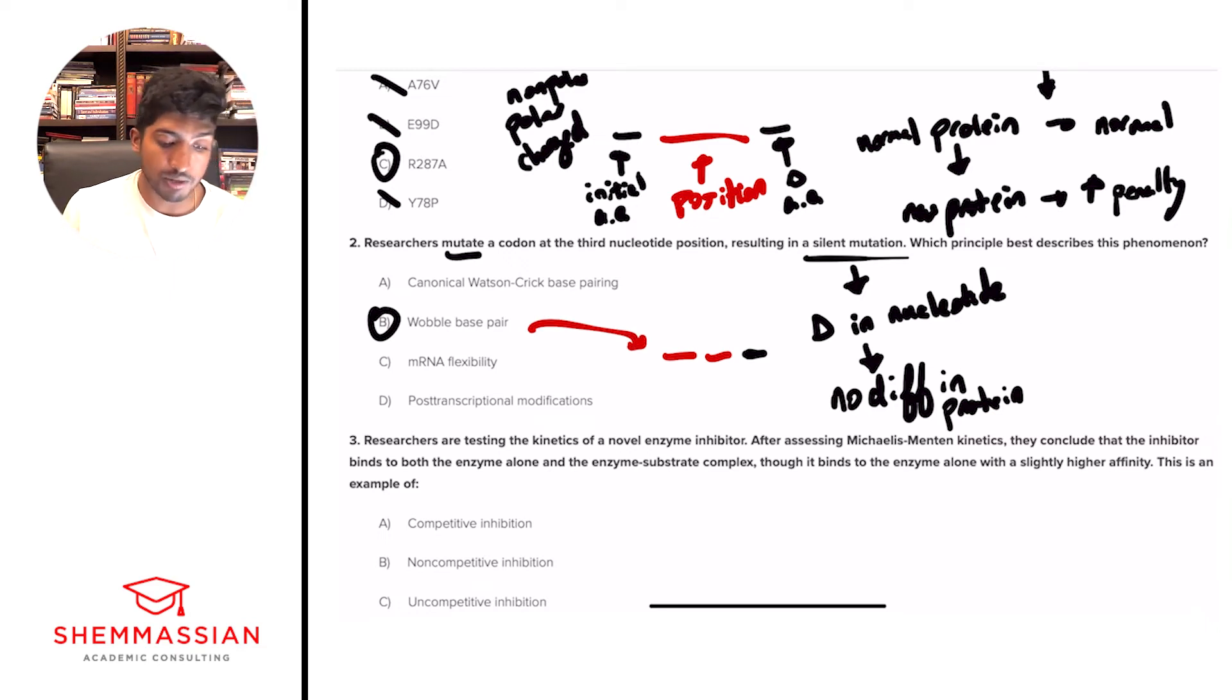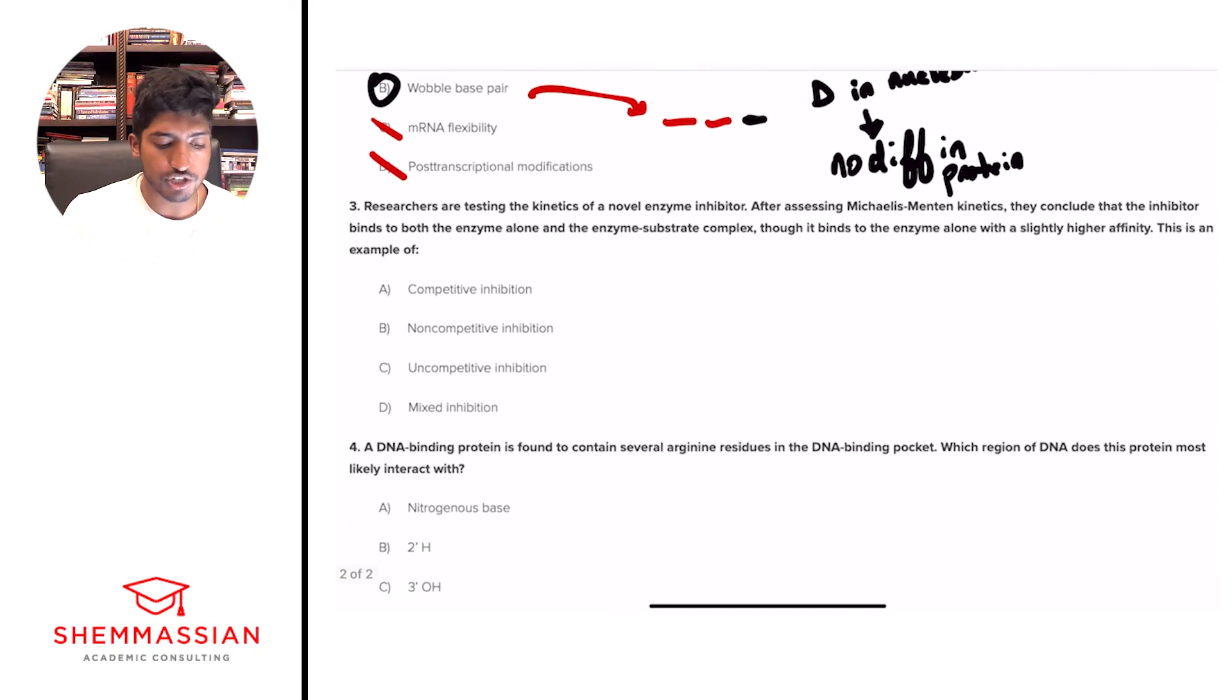And so that's why B is our best answer, just because that third nucleotide position, when we have these three positions that match with a codon, the third one is a little loose. It can change to different nucleotides and give you the same amino acid. So that's called the wobble base pair theory. A, canonical Watson-Crick base pairing, that's just the usual ATCG, right? A matches with T, C matches with G. Doesn't really talk about any mutations or anything like that. So we're going to eliminate A, mRNA flexibility, not really associated with this. So it's just a broad term talking about whether flexible, mRNAs can match with different codons and anticodons. So we can eliminate C, not really a term we're familiar with. And then D, post-transcriptional modifications, again, not really associated with mutations at that third nucleotide position. So we're going to eliminate D. Awesome. So wobble base pair is just a term you should know off the top of your head, just because that third nucleotide position is very, very important.